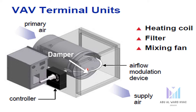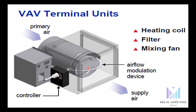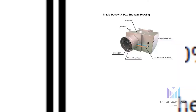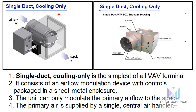It is very cost effective and flexible. Typically either a pneumatic or electric controller can be used to adjust the damper. The first configuration for VAV terminals is the single duct cooling only system. Single duct cooling only is the simplest of all VAV terminals — it consists of an airflow modulation device with controls, all packaged in a sheet metal enclosure.